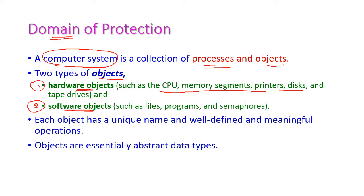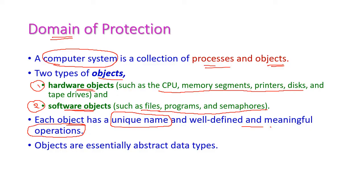Software objects include all software and program components such as files and programs. Each object has a unique name by which we can identify it, and objects have well-defined and meaningful operations that define the purpose of those objects. Objects are essentially abstract data types.